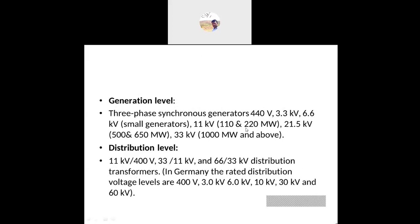Some generators operate at 11 kV at 110 or 220 megawatts. Coming to 21.5 kV — in India we use 11 kV, and in some cases 33 kV generators. For 21.5 kV generators the capacity is around 500 to 650 megawatts. If using a 33 kV generator it will produce 1000 megawatts and above, depending on the turbine type.